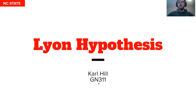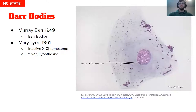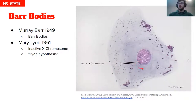Hello, everyone. My name is Carl, and today I'm going to be talking about the Lyon hypothesis. So first, quick background. In 1949, a scientist by the name of Murray Barr discovers what he calls Barr bodies, which are these colorations on the nucleus of a female cell. This is a somatic skin cell here.